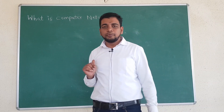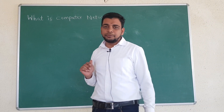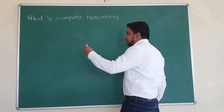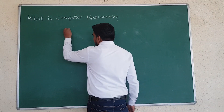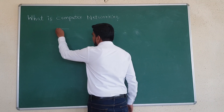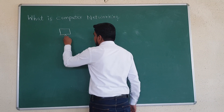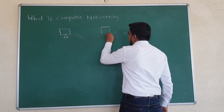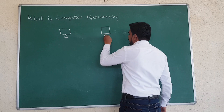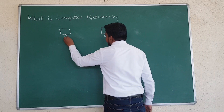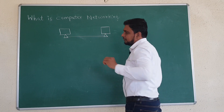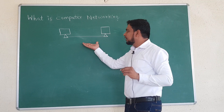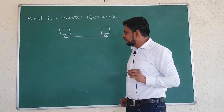When we are connecting more than one computer, then it is called a computer network. More than one computers are connected through a cable — this is the basic structure of a computer network.